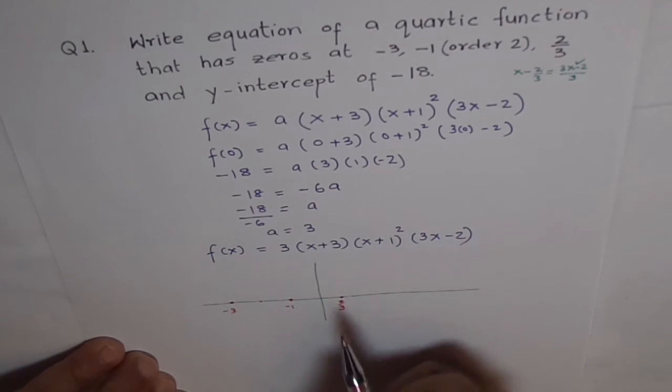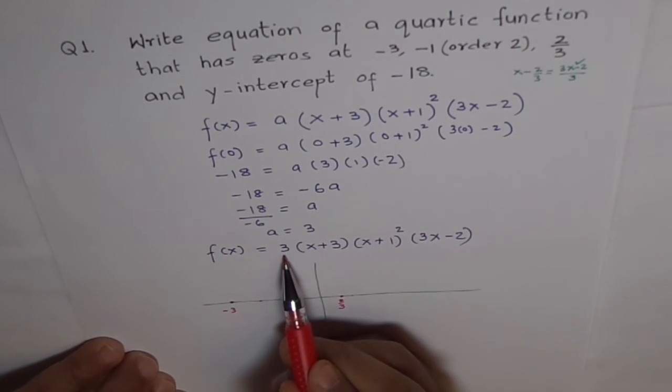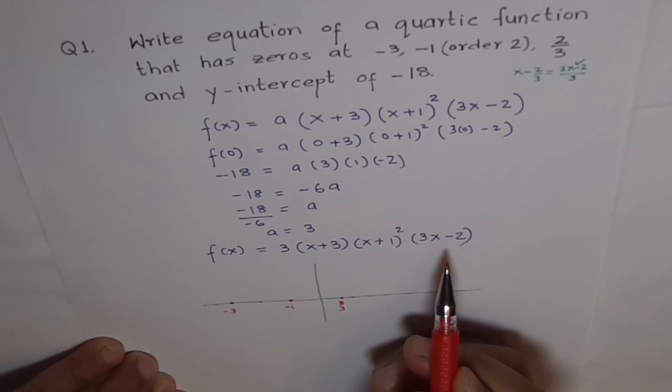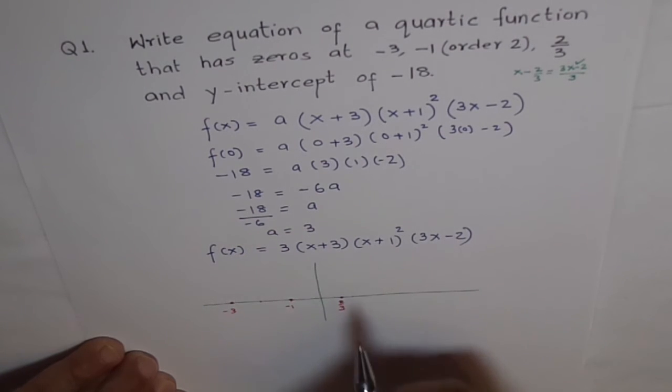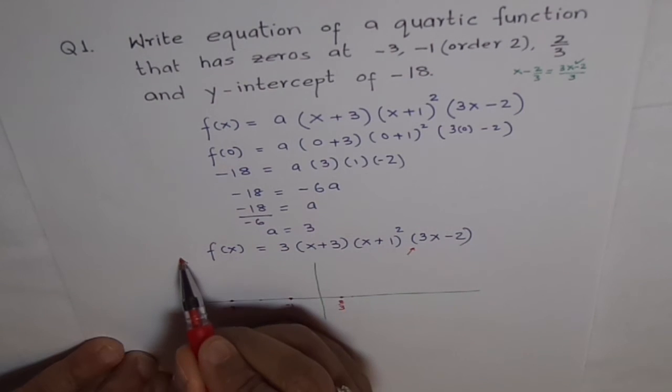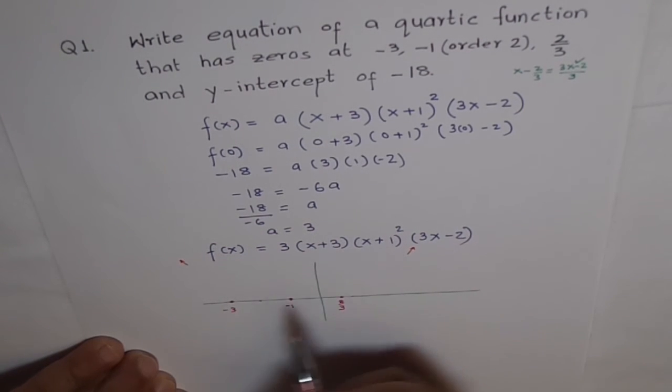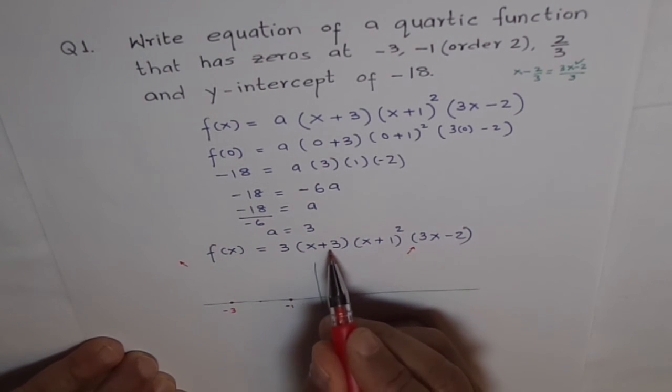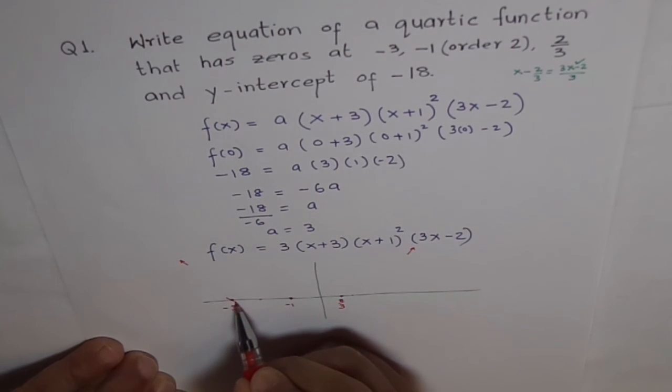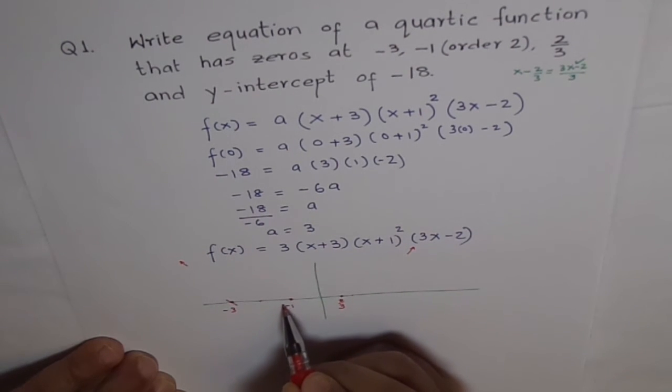The order of the zero is? See? Leading coefficient is positive and it is degree 4. Therefore, the end behavior will be going up. So, here we should be going up. Here we should cross like a line because it is order 1.